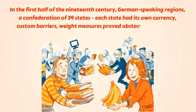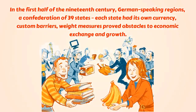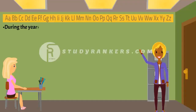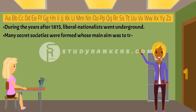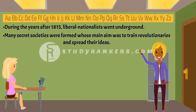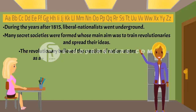In 1834, a customs union or Zollverein was formed, which abolished tariff barriers and reduced the number of currencies from over 30 to 2. During the years after 1815, due to suppressive regimes, liberal nationalists went underground. Many secret societies were formed whose main aim was to train revolutionaries and spread their ideas. During this time, being a revolutionary meant a commitment to oppose monarchical forms and to fight for liberty and freedom. Revolutionaries believed the creation of nation-states was a necessary part of the struggle for freedom.